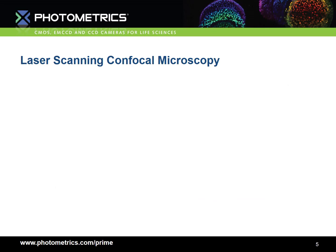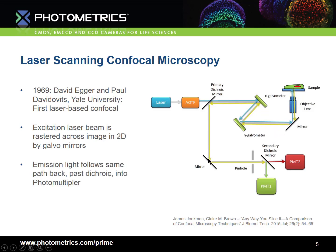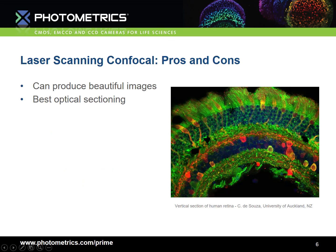The first microscope using this principle was the laser scanning confocal microscope, invented in 1969 by David Egger and Paul Davidovitz at Yale University. As only light from a single point of focus within the sample can pass through any given pinhole, we therefore need to scan this point across our sample to generate an entire 2D image. This is achieved through X and Y galvo scanning mirrors. The excitation laser beam is raster scanned across the image by these mirrors. The returning light passes through the optical system before being focused through a pinhole and reaching some photomultiplier tubes. The images resulting from this technique can be truly beautiful — very good contrast, very good optical sectioning in multiple colours.